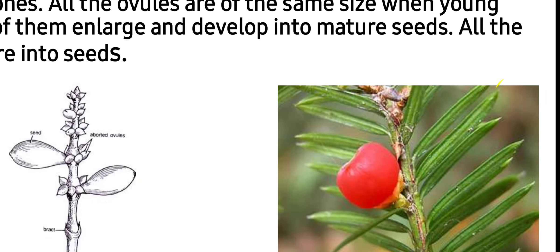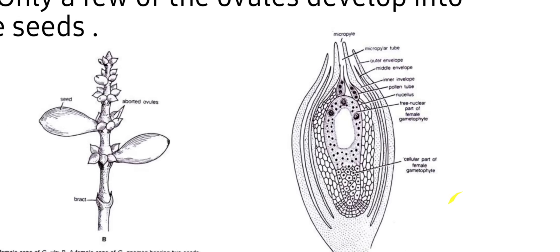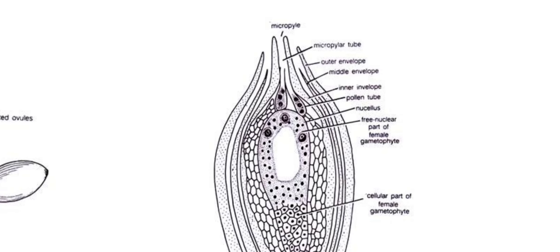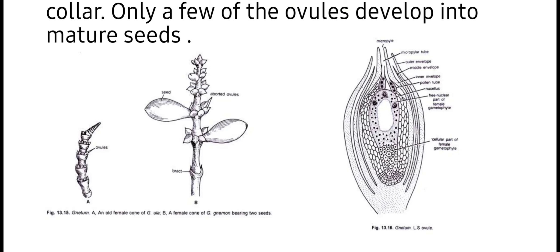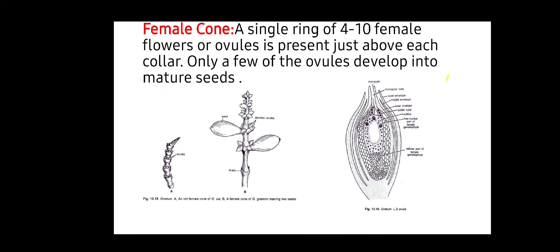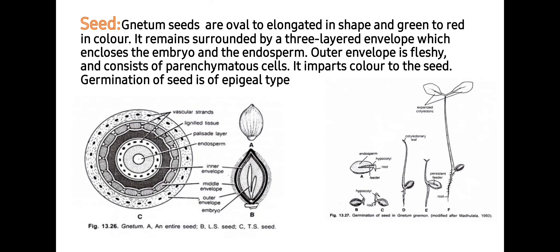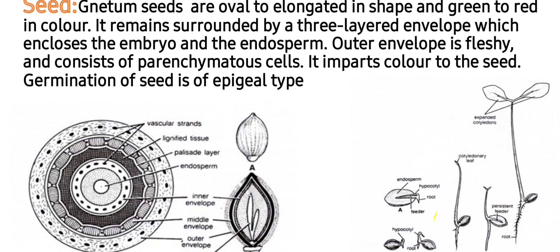The internal structure of the ovule shows the micropylar end, the free nuclear part of the female gametophyte, the cellular part of the female gametophyte, and outer, middle, and inner layers, as well as the nucellus, which provides nutrition to the developing female gametophyte. Gnetum seeds are oval to elongated in shape and green to red in color. They are surrounded by a three-layered envelope which encloses the embryo and the endosperm.